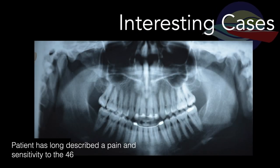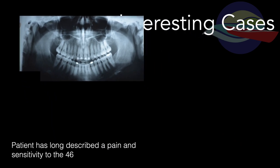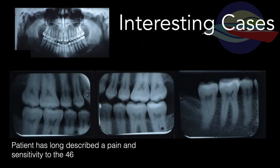In this first case, a patient has long described pain and sensitivity to the 4-6. They brought to their appointment a PAN and PAs that had been taken prior. You can see from the PAN that this patient has had ortho and has healthy bone levels. From here, we don't see any obvious pathology — so what is going on at the 4-6? If we take a closer look at the PAs, there is no overtly obvious issue here for what could be causing that pain and sensitivity.